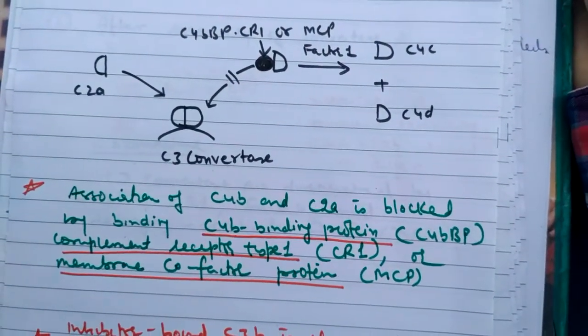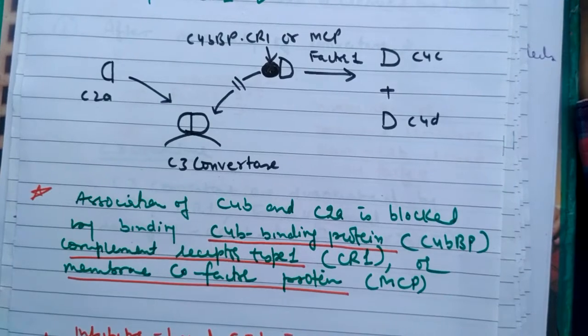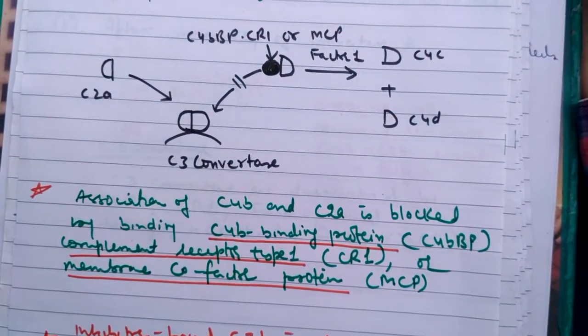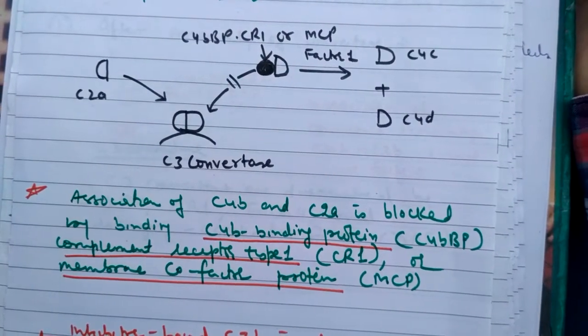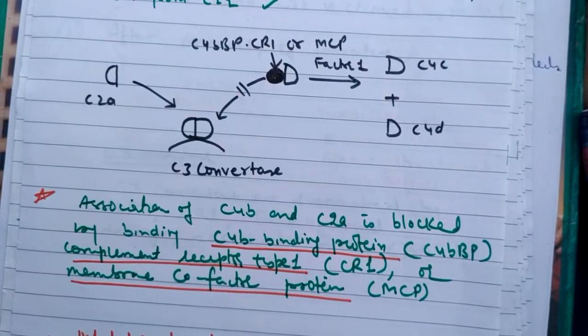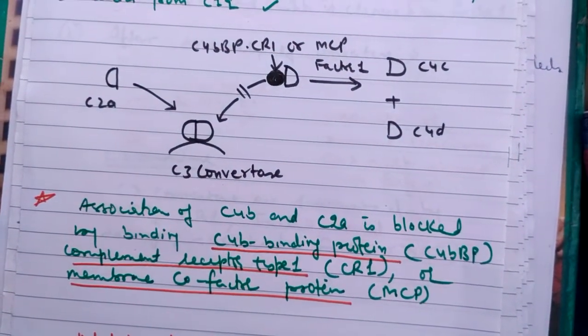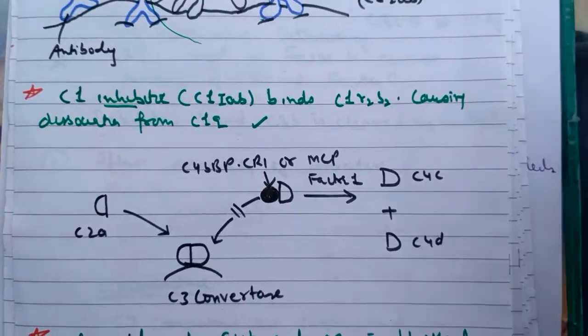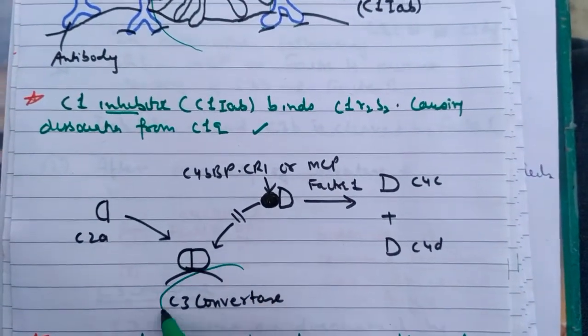Next, the association of C4B and C2A is blocked by binding C4B binding protein, i.e. C4BBP, complement receptor 1, i.e. CR1, or membrane cofactor protein, i.e. MCP. What does it mean? This is the C3 convertase.